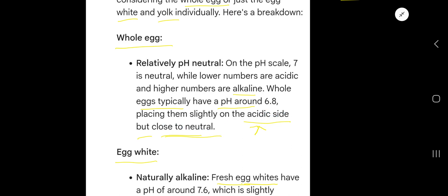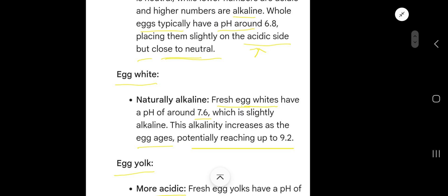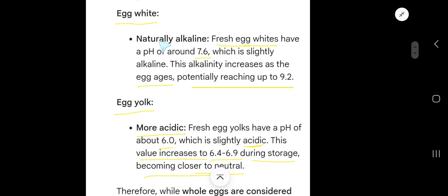but basically according to pH scale, a whole egg is slightly acidic. Egg white: naturally, fresh egg whites have a pH of around 7.6, which is slightly alkaline. This alkalinity increases as the egg ages...